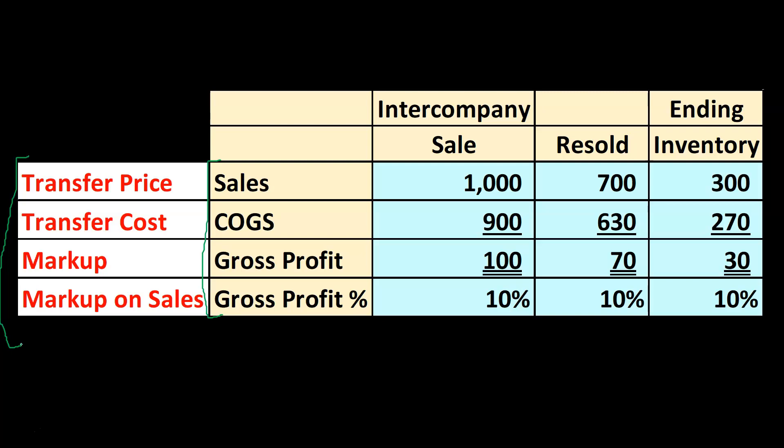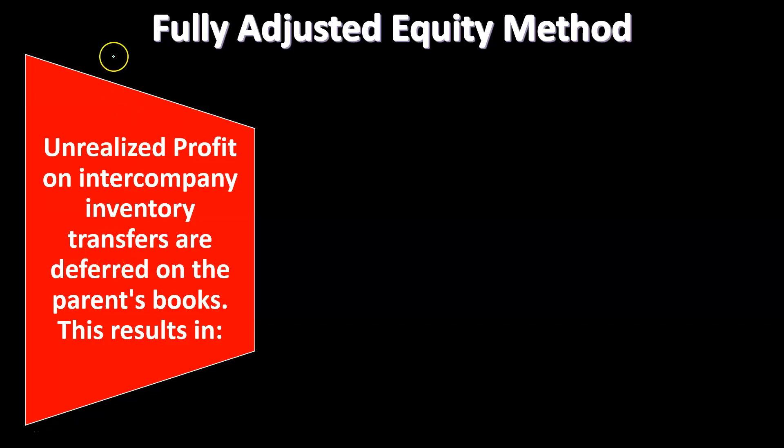The fully adjusted equity method is what we'll use for most problems. The equity method means the parent company reflects its investment in the subsidiary using the equity method — reflecting their portion of the subsidiary's net income and their portion of net assets on the books. Then we add the adjustments happening with the consolidation related to inventory, reflected in the fully adjusted equity method because they will be taken into account within the elimination process.